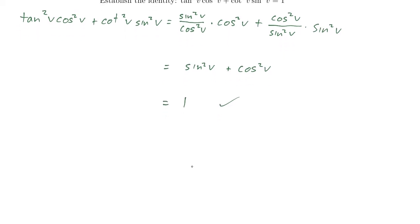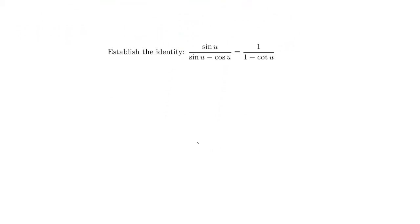Right here. Sine u over sine u minus cosine u equals 1 over 1 minus cotangent u. Now, here, both sides look pretty complicated. And it's not entirely clear which side we should start with. I'm going to show you two ways to do this. First, there's a quick and kind of tricky way to do it if we start with sine u over sine u minus cosine u. So let's see what that looks like.